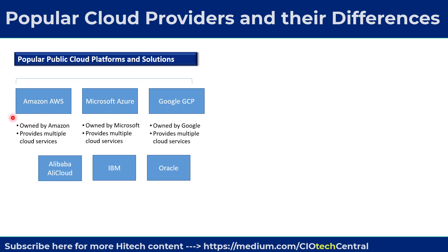Together, these three CSPs make up the majority share of the overall cloud computing market. Other noteworthy CSPs include Alibaba, which is a CSP based in China but now operates data centers in many other world geographies, as well as IBM and Oracle.